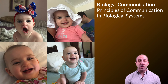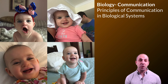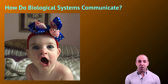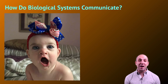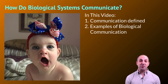Communication is found all throughout the biological system, and that's what this unit will deal with. Just like our last unit on regulation, we're going to look at different examples across various domains of the system to get a handle on the universal principles at work. The question we're dealing with in this overview video is: how do biological systems communicate? We'll talk about what communication is and look at some examples of biological communication.